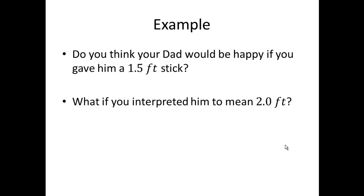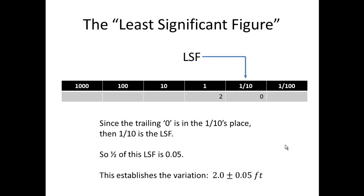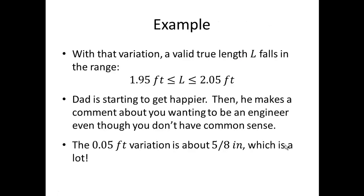Do you think your dad would be happy if you gave him a one and a half foot stick? What if we interpreted him to mean 2.0 foot? Here we've got the 2.0. We've got the zero in the one-tenth place, so one-tenth is the least significant figure. Half of the least significant figure is 0.05. So this establishes the range 2.0 plus or minus 0.05 foot. With that variation, you could end up with a length that falls in the range 1.95 foot to 2.05 foot.